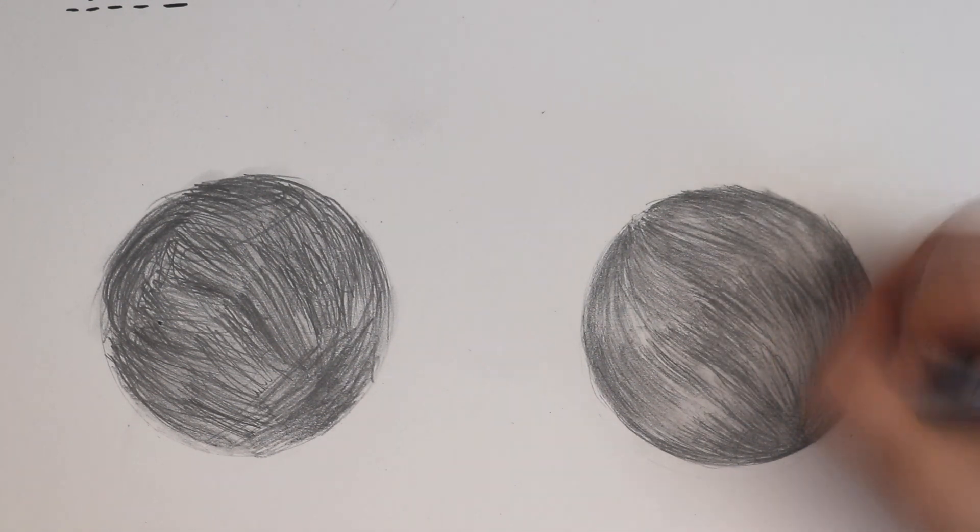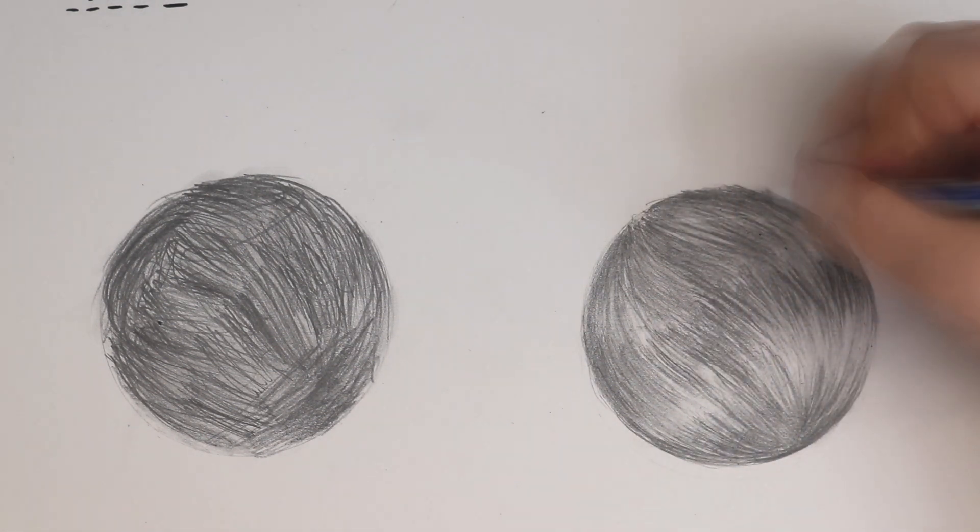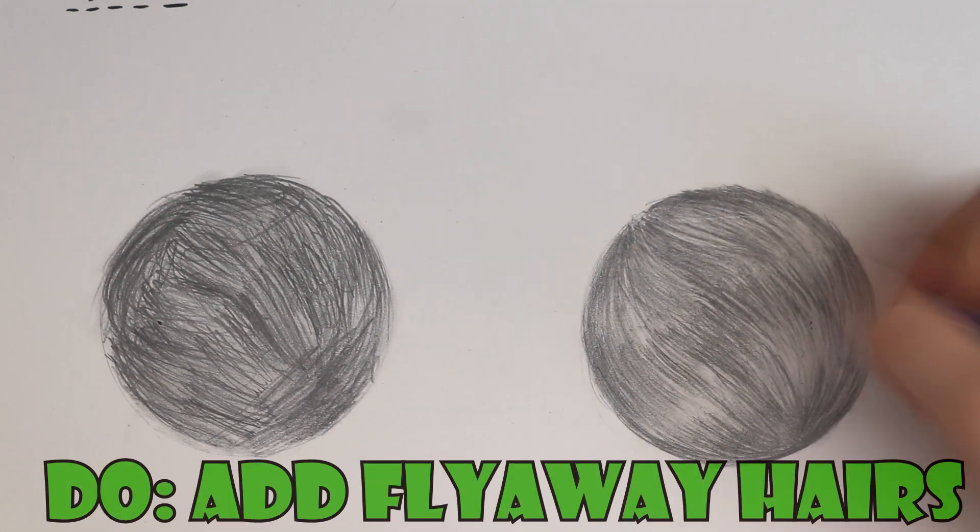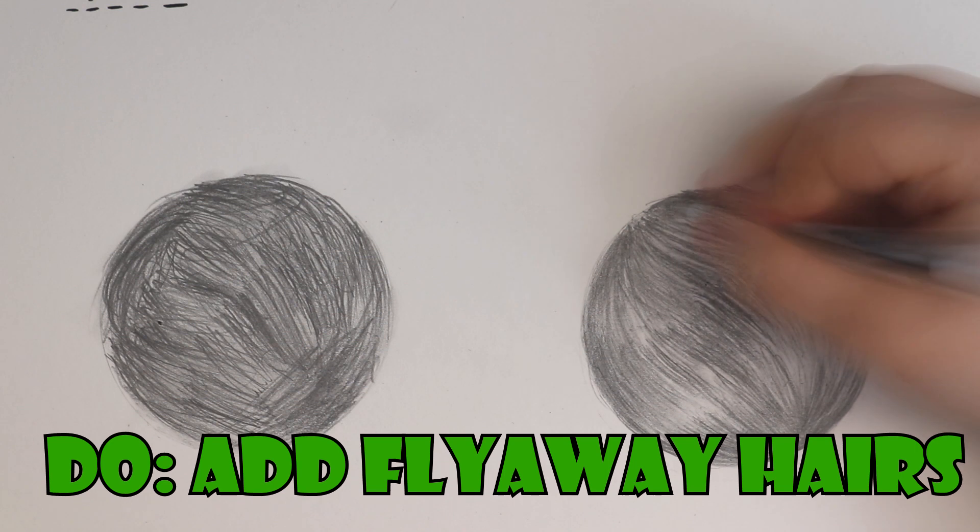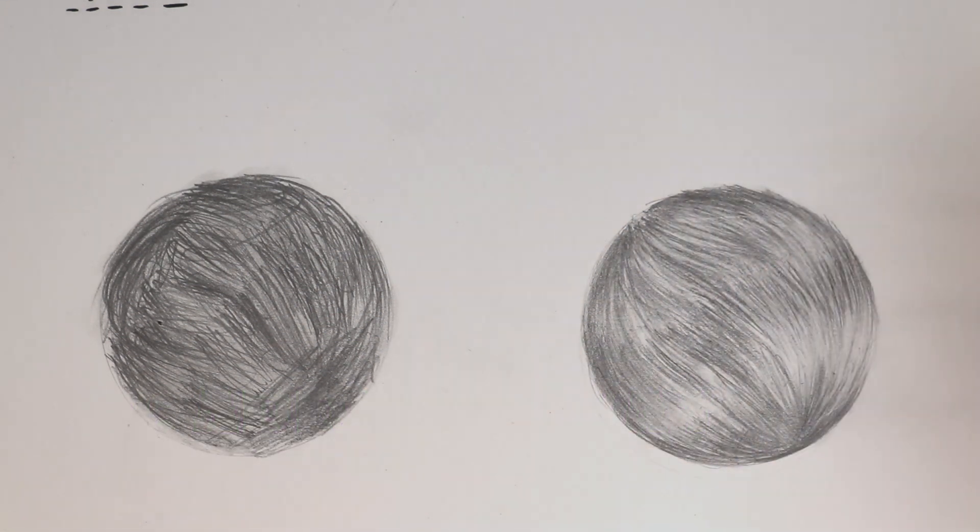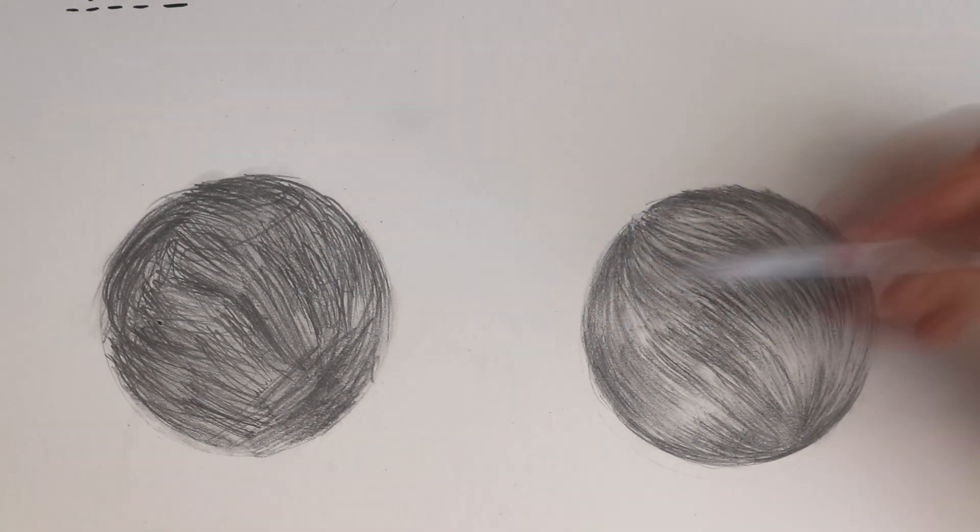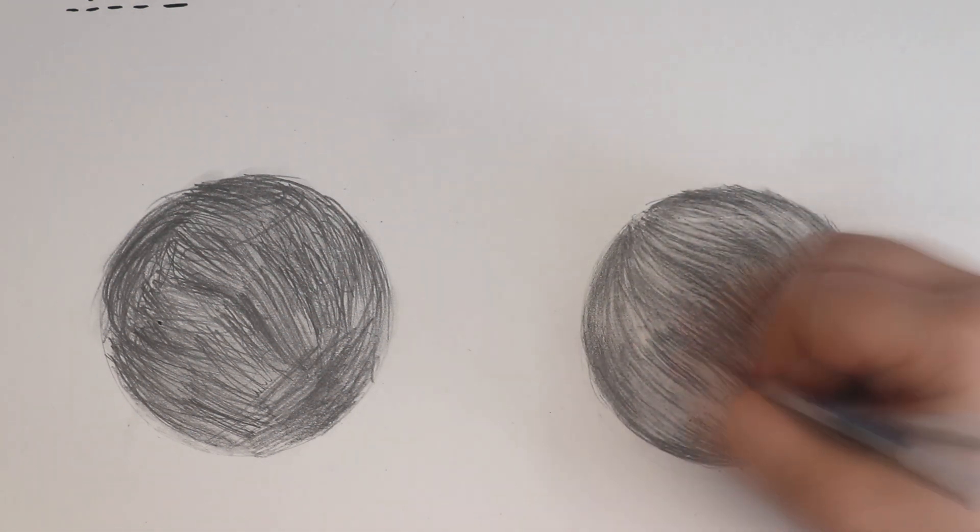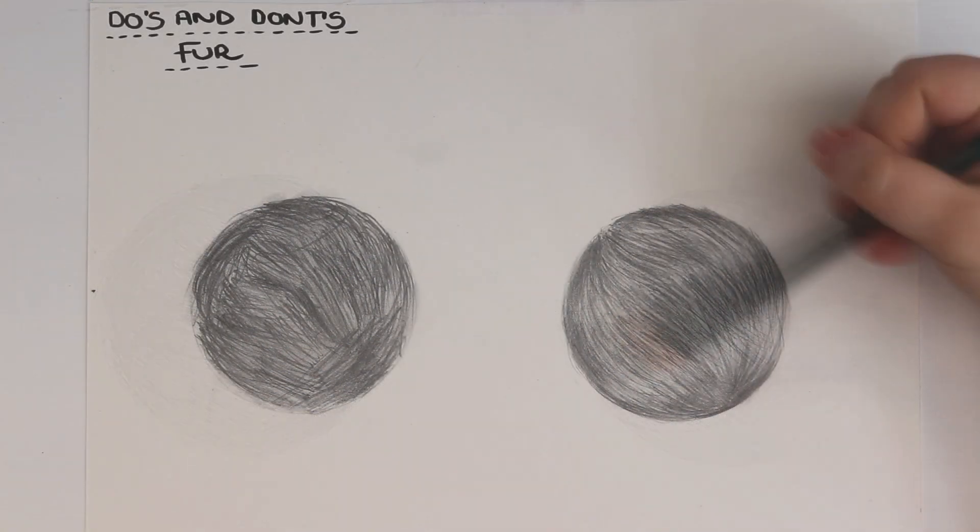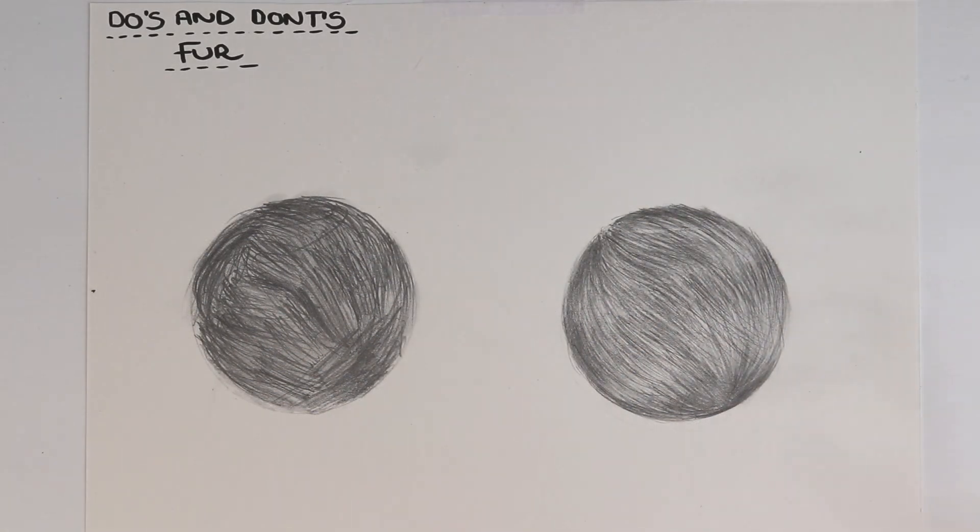One last thing I wanted to mention as a final tip for drawing fur is to try and focus on getting in some fly away hairs at the end. After I have rendered an area, to add even more realism I do like to add in some fly away hairs. To do that I will use a sharp graphite pencil and just use flicking motions to add in some fur strands, and this does look quite realistic.